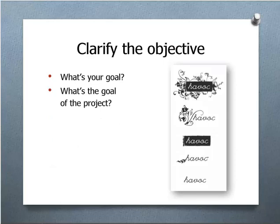The first rule of getting the right feedback for your design is to clarify your objective to the people you want feedback from. Ask yourself what your goal is as a designer and what's your goal for the project. For example, with this Havoc logo I designed — is my goal simplicity? Professionalism? To reach my target audience? To look cool and hip and also professional? Clarify it to yourself before you start the design, and then clarify it to the people giving you feedback so their feedback coincides with your project goal.